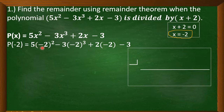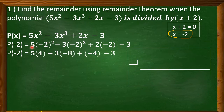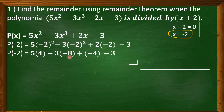We are going to substitute the variable x by negative 2. So we have p of negative 2 is equal to 5 times quantity of negative 2 squared, minus 3 times quantity of negative 2 cubed, plus 2 times negative 2, minus 3. Now we will simplify. Negative 2 squared is equal to 4. And negative 2 cubed: negative 2 times negative 2 is positive 4, times negative 2, that is equal to negative 8. Plus 2 times negative 2 is equal to negative 4.